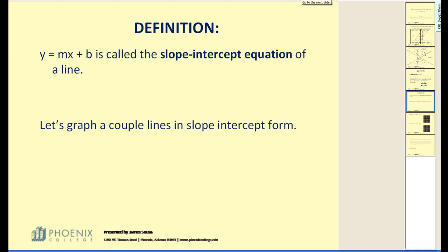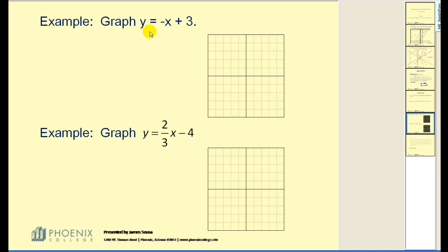Let's go ahead and graph a couple of these. Let's graph y equals negative x plus 3. This is the form the line is in. We need to identify the value of m and the value of b.